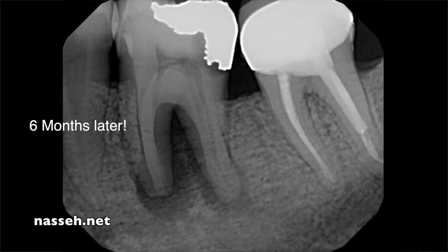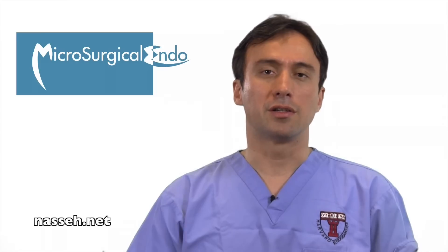At this point, deep periodontal pocketing and probing in the furcation area was present along with swelling in the vestibular space. The change in prognosis from good to guarded was explained to the patient, who elected to try and save the tooth nevertheless.